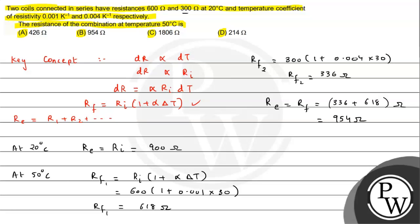So we have already calculated the resistance of the combination at 50 degrees Celsius. The answer is 954 ohms, so option B is the answer to the question. I hope you understood the solution, all the best!